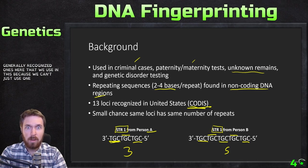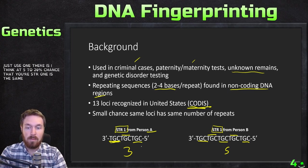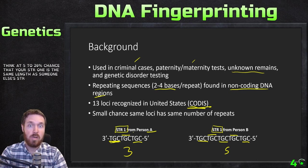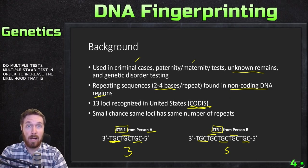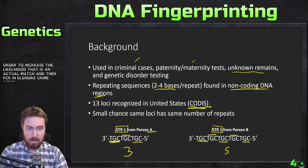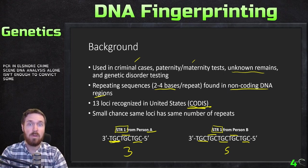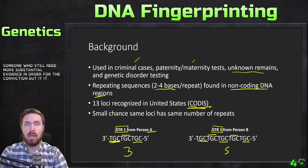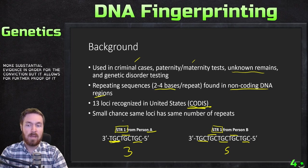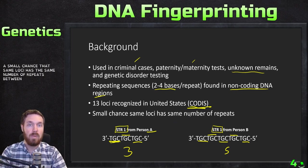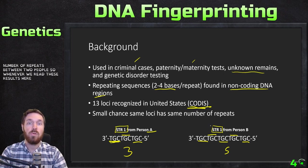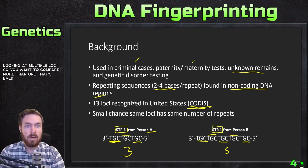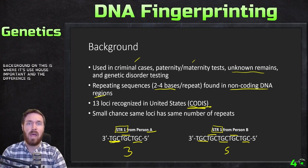We use 13 loci because we can't just use one. There's a 5 to 20% chance that your STR at one locus is the same length as someone else's. Some countries use more — the UK uses 17. You have to do multiple STR tests to increase the likelihood of an actual match. Also, PCR and DNA analysis alone isn't enough to convict someone; you still need more substantial evidence, but it provides further proof.